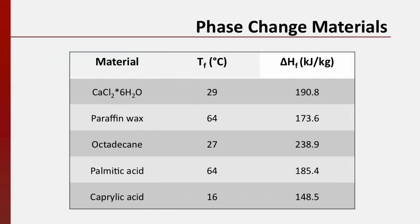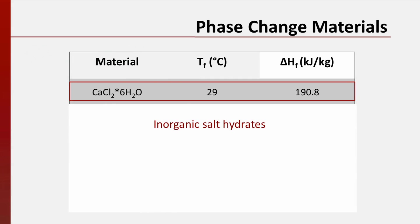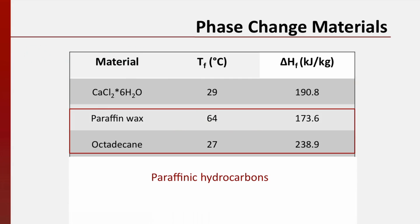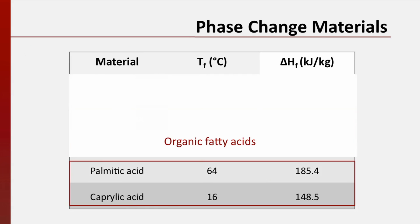The desire to harness latent heat has led to the development of a class of materials called phase change materials. These materials have been specifically designed to change phase at desirable temperatures so that they can store and release energy in a way that is useful to consumers. These materials fall into three classes: inorganic salt hydrates, paraffinic hydrocarbons, and organic fatty acids.